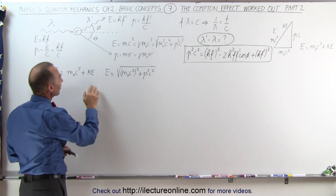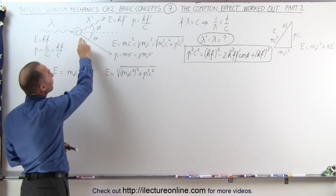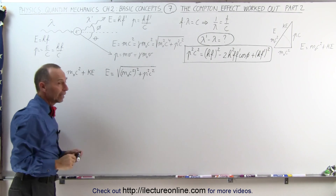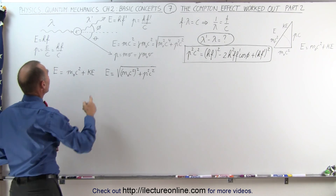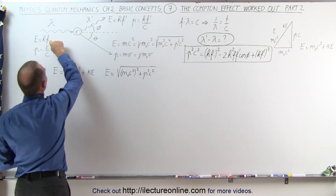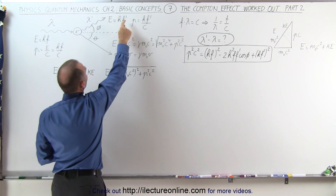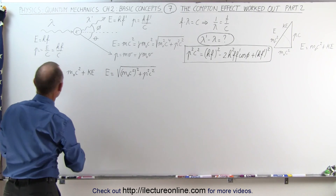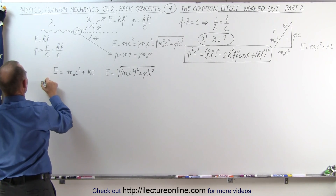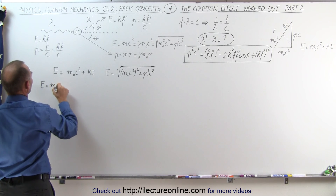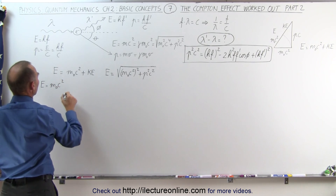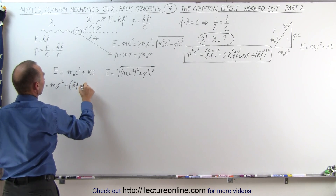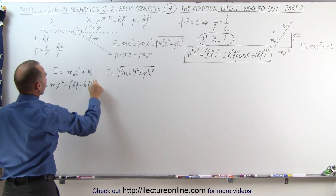We also realize that the kinetic energy gained by the electron is the kinetic energy lost by the photon. So what we do is take the energy of the photon before the collision and subtract from that the energy of the photon after the collision — that will equal the kinetic energy of the electron. So the energy equals the rest mass of the electron plus the difference in the energy of the photon from before and after the collision.